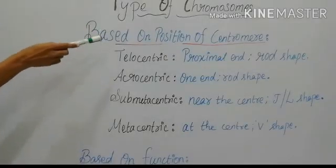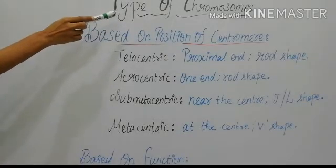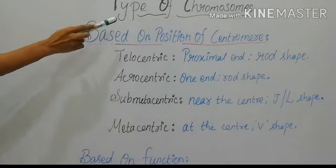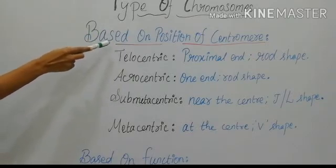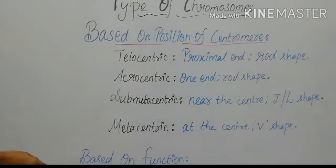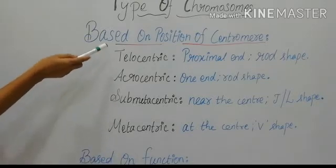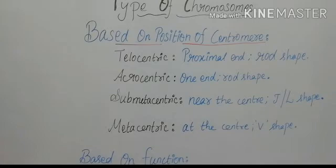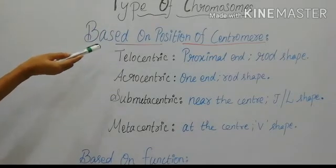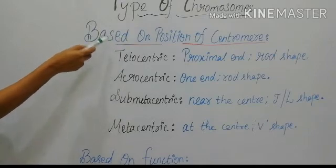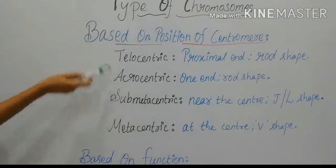Here we can see the types of chromosomes. The chromosomes are categorized in two forms: based on the position of the centromere, and based on the function of chromosomes. Based on the position of the centromere — which is also called the primary constriction — there are four types of chromosomes.